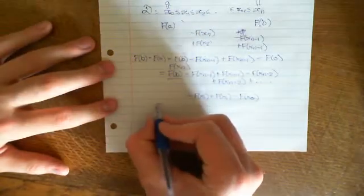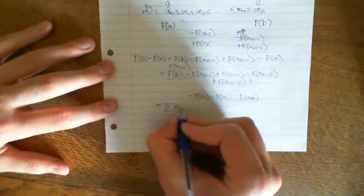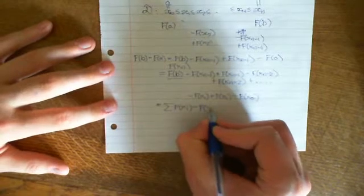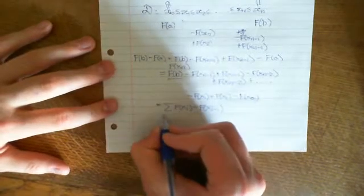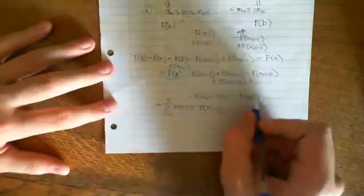So I could rewrite this nicely as the sum of F(xᵢ) minus F(xᵢ₋₁) from i equals 1 to n. Let's agree that this is the same thing as this. When i equals 1, we've got F(x₁) minus F(x₀). So this is this bit here.